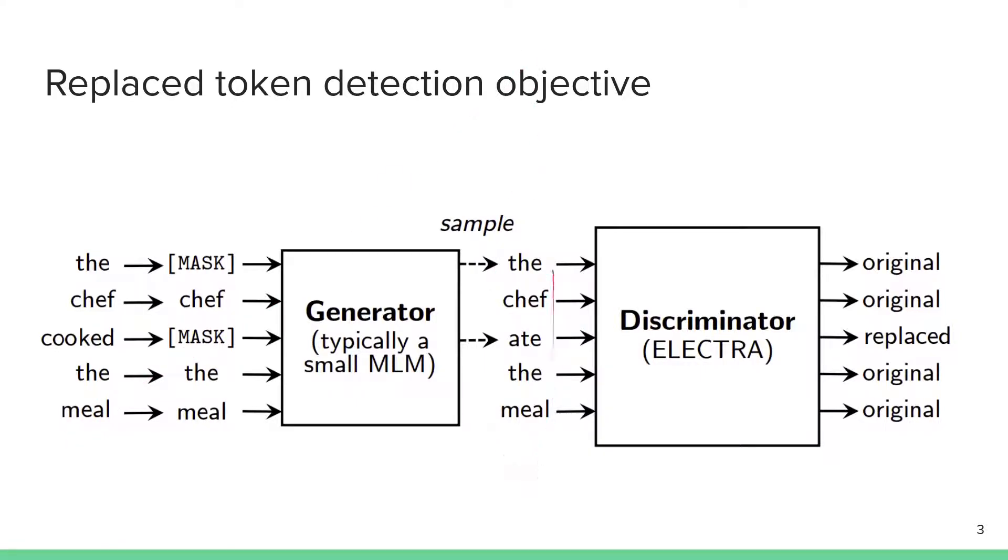Then this corrupted sequence is inputted to a second network, a discriminator, which is the core of the ELECTRA model. This tries to predict for each word in the sequence whether it is original coming from the original sequence or whether it has been replaced by the generator. In this case you have to predict that 'the' and 'chef' are original but 'ate' has been replaced, so it is the corrupted word. This might be useful because the model is learning to understand the language to figure out that chefs typically don't eat their meals, they typically cook them, so perhaps it is not really fitting in the current context.